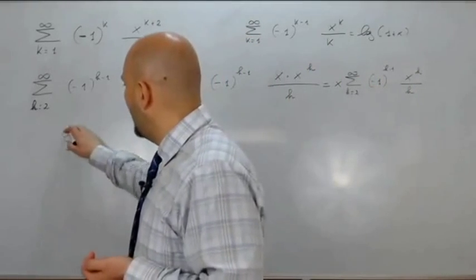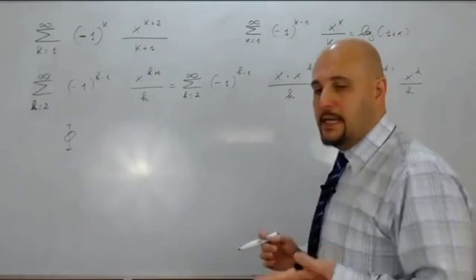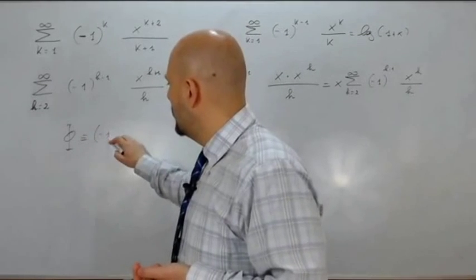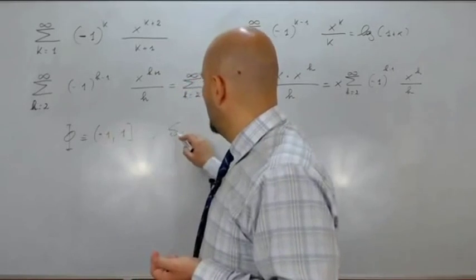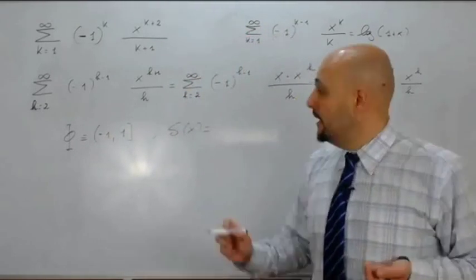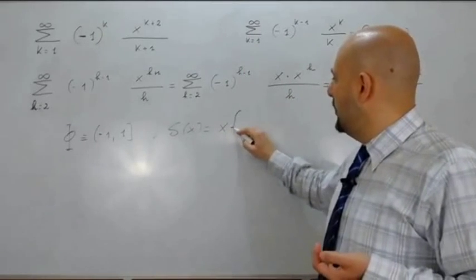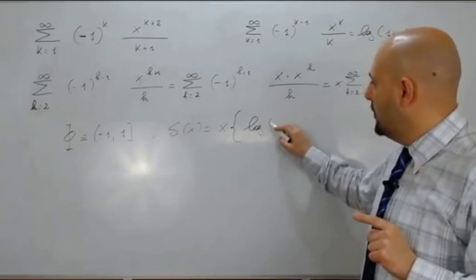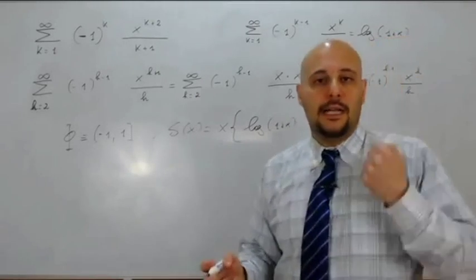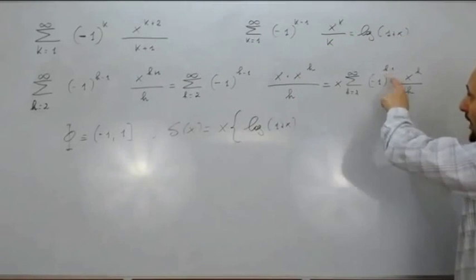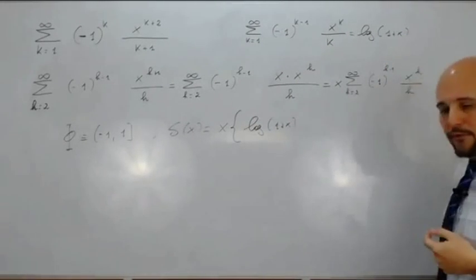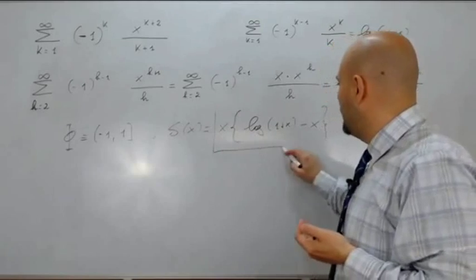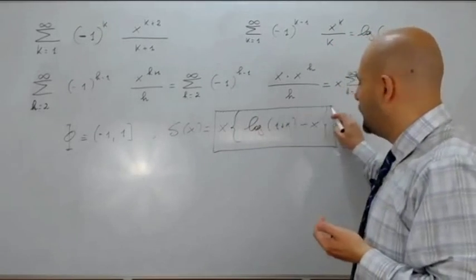L'insieme di convergenza puntuale è sempre x compreso fra meno 1 e 1, con meno 1 escluso e 1 incluso — non cambia niente in questo caso. Cambierà la somma s(x): x davanti moltiplica il logaritmo naturale di 1 più x, a cui dobbiamo sottrarre il termine quando h è 1. Quando h è 1: meno 1 alla 0 è 1, x alla 1 fratto 1 è x. Quindi la somma è x moltiplicato il logaritmo naturale di 1 più x, meno x.